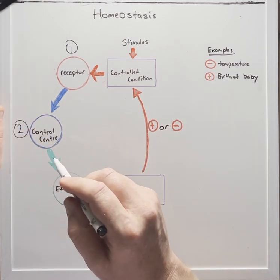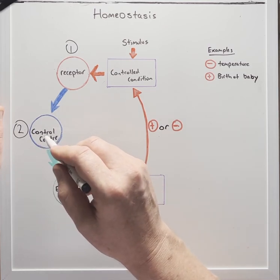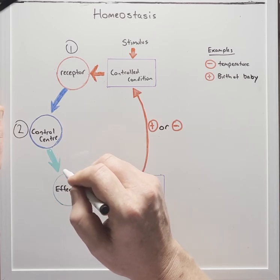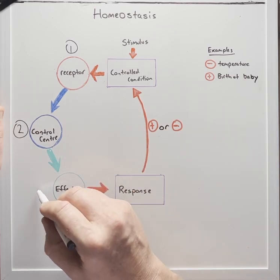Number two, the control centre evaluates the signal from the receptor and sends its own signal, an efferent signal which again can be a hormone or a nerve signal, to the effector, number three.